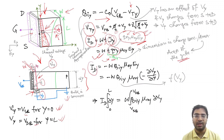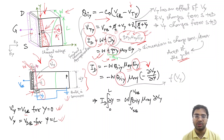Your equation becomes: Id = −W·Qiy·μny·Ey. You can replace Ey with −dVy/dy. Since Qiy is also a function of the channel voltage Vy, we take dy to the left-hand side and integrate over the entire channel from y = 0 to y = L.